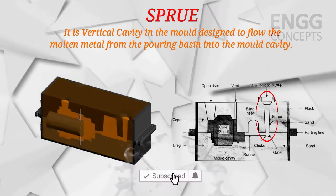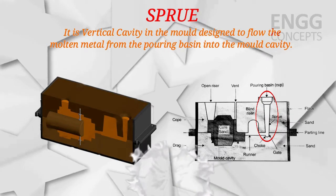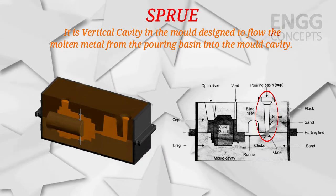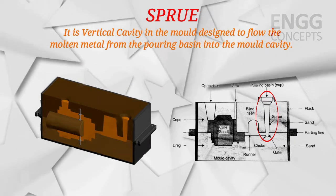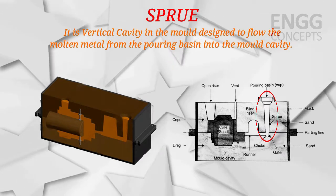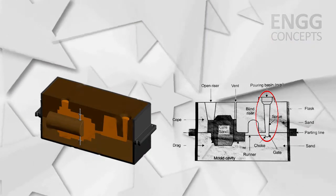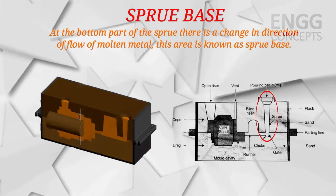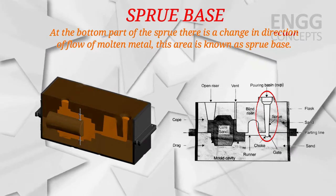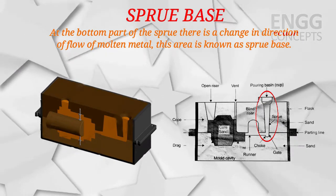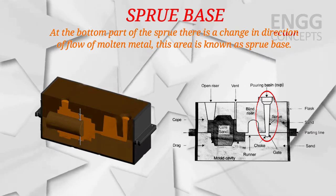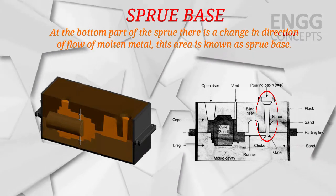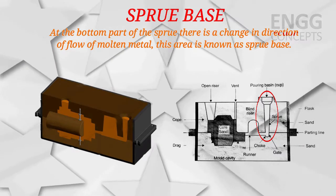The sprue is a vertical cavity in the mold designed to flow the molten metal from the pouring basin into the mold cavity. The sprue has a slightly tapered cross section. At the bottom part of the sprue, there is a change in the direction of flow of molten metal — this area is known as the sprue base. The cross section of the sprue is always reduced, and the sprue base is filled completely with molten metal, which prevents air from entering the mold cavity.